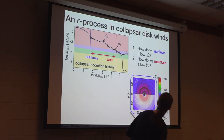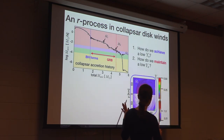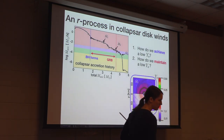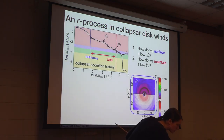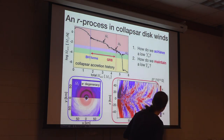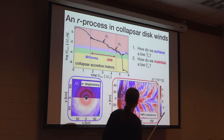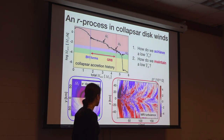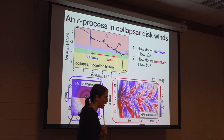That's how we get the low Y-E that we need for the R-process. The second question has to do with how material is going to be injected from the disk.